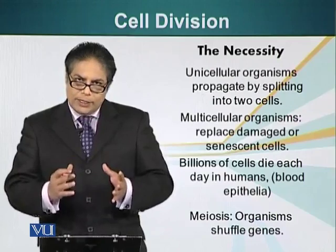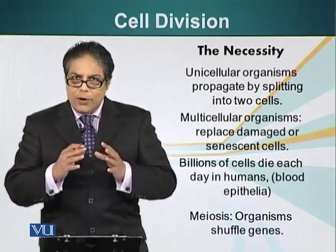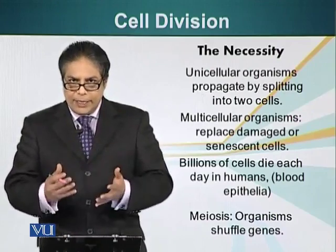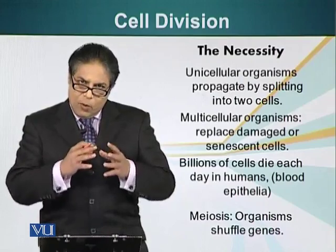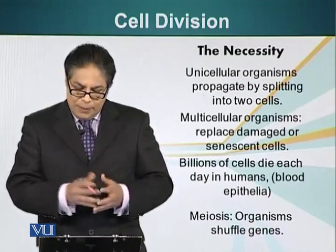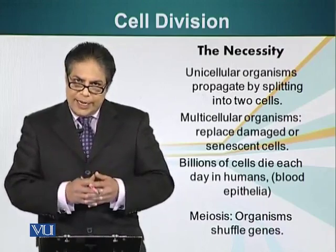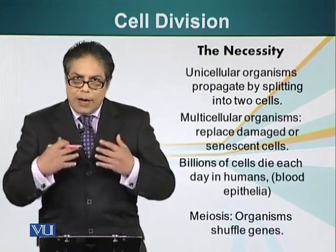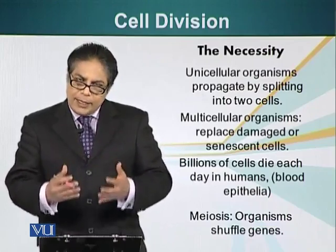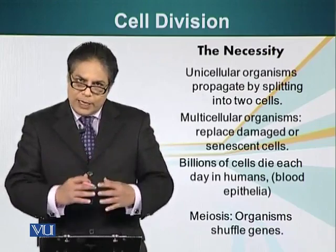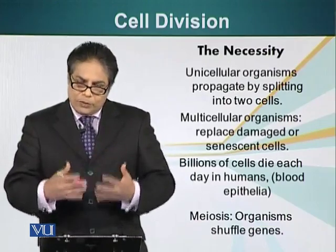Multicellular organisms — organisms that are made up of many cells — need cell division to replace old, dead, or senescent cells, in order to keep their organs and tissues functional and viable. In humans, billions of cells die each day. For example, red blood cells and epithelial cells have to be replaced, and that replacement comes from another cell through the process of cell division.